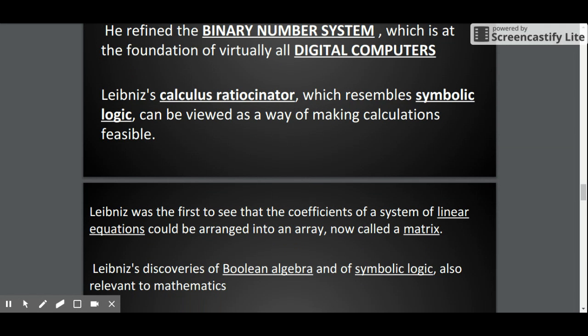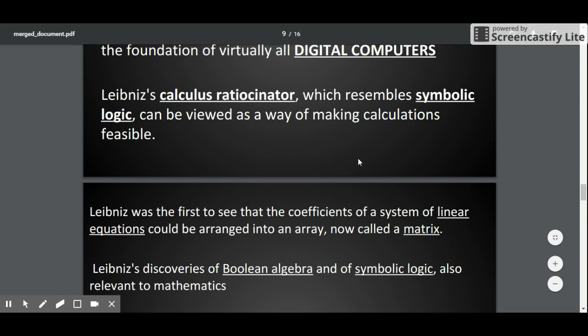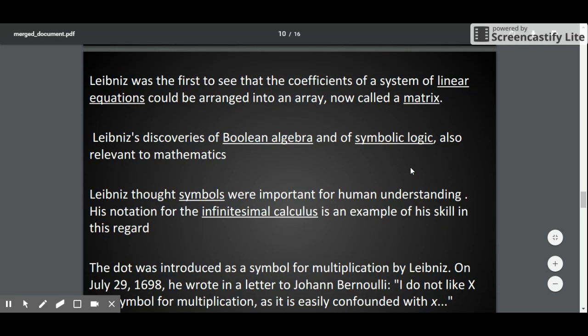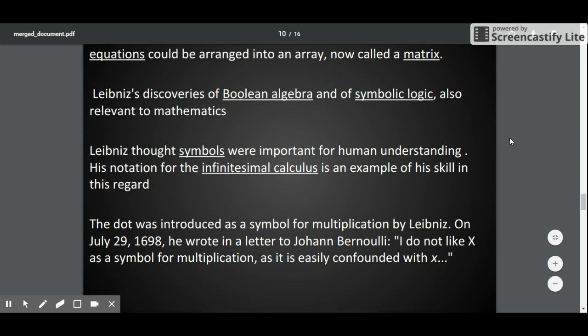Leibniz's calculus ratiocinator, which resembles symbolic logic, can be viewed as a way of making calculations feasible. Leibniz was first to see that a system of linear equations could be arranged as an array, now called a matrix.